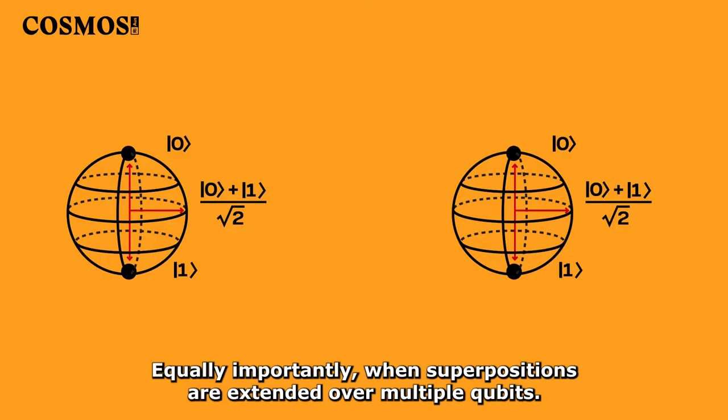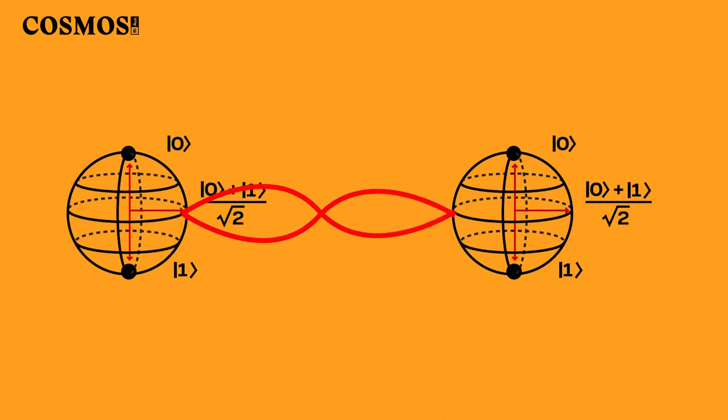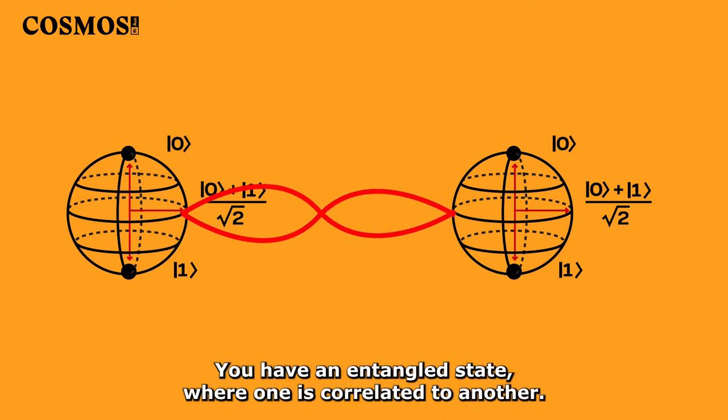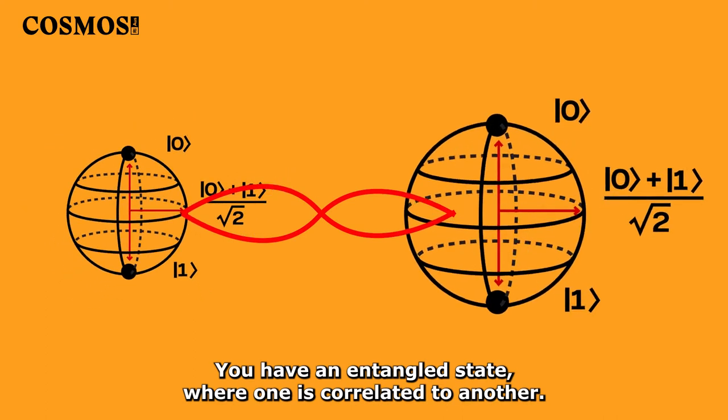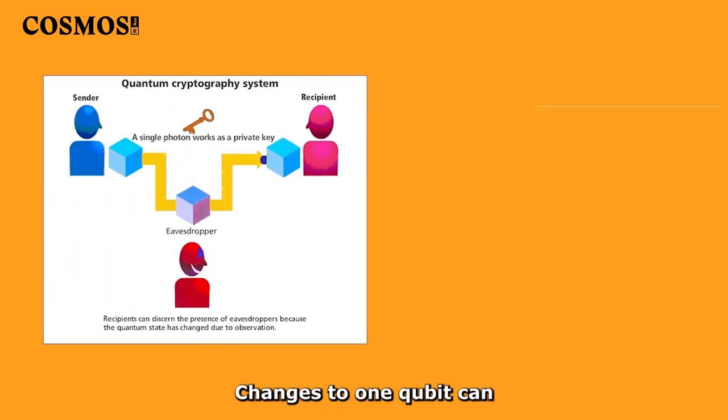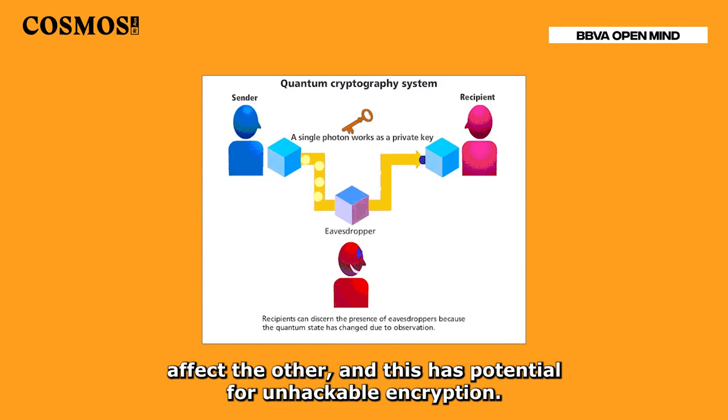Equally importantly, when superpositions are extended over multiple qubits, you have an entangled state, where one is correlated to another. Changes to one qubit can affect the other, and this has potential for unhackable encryption.